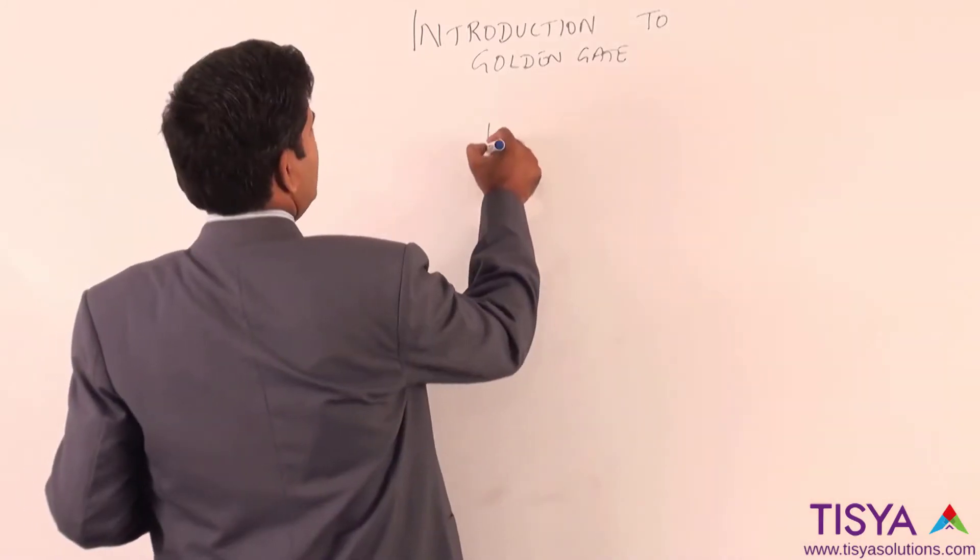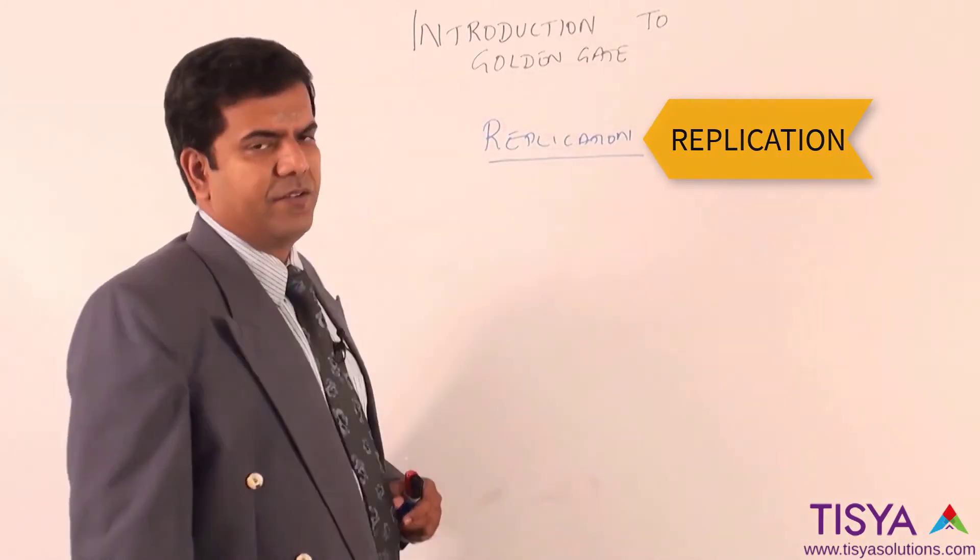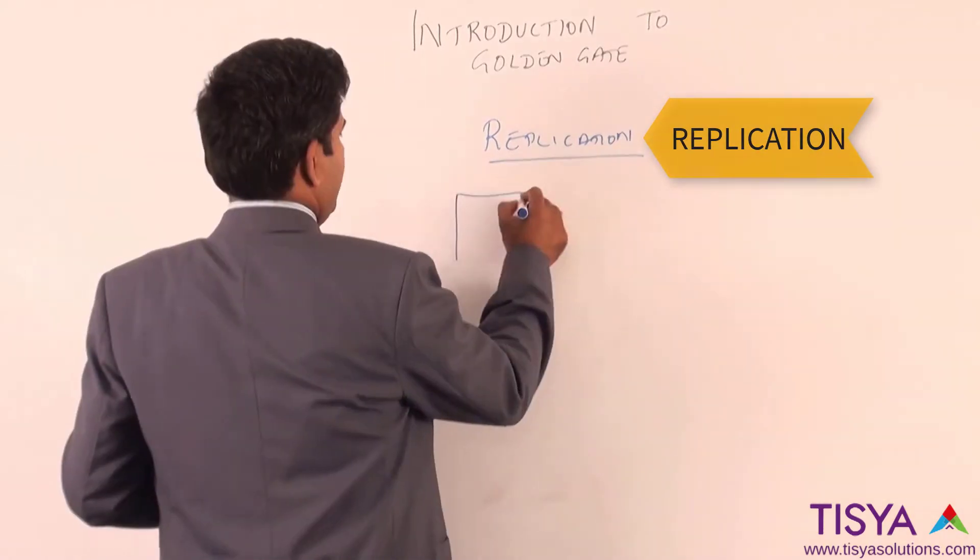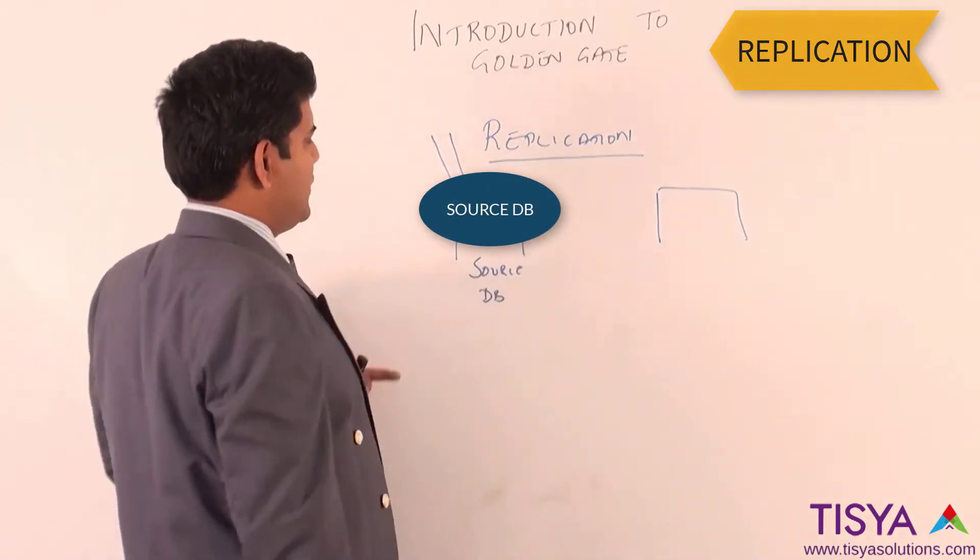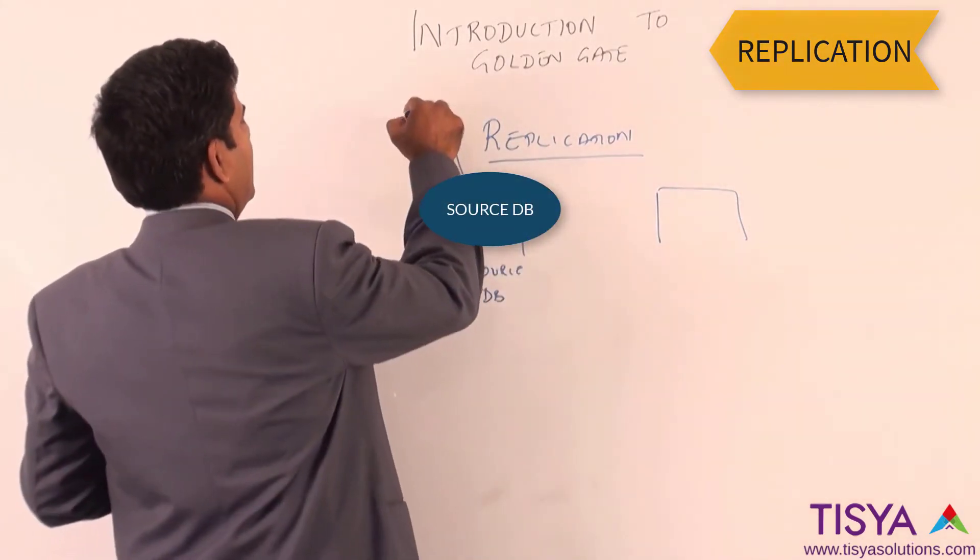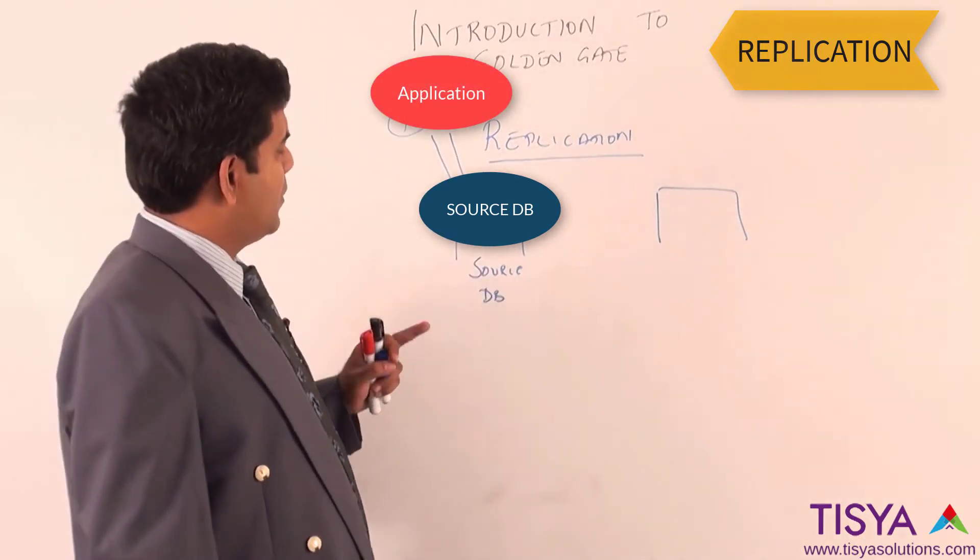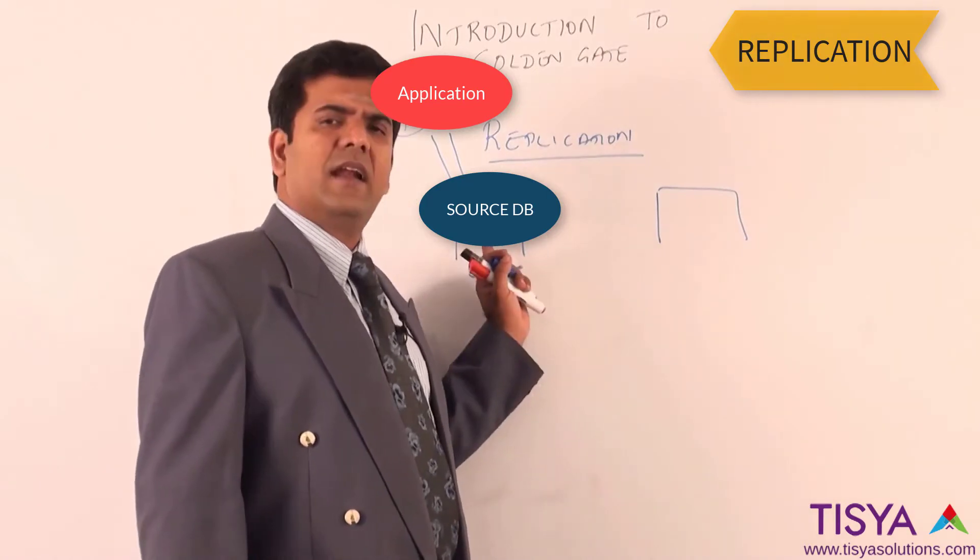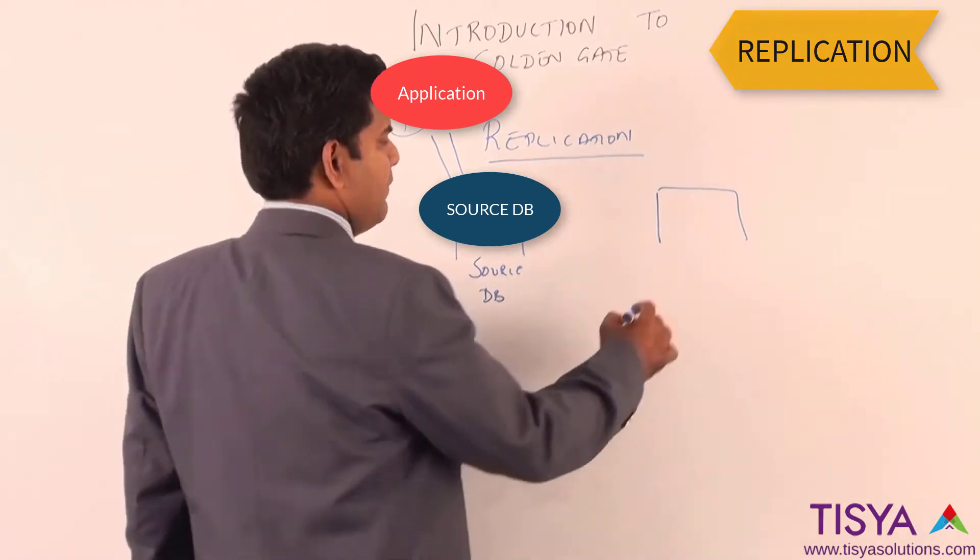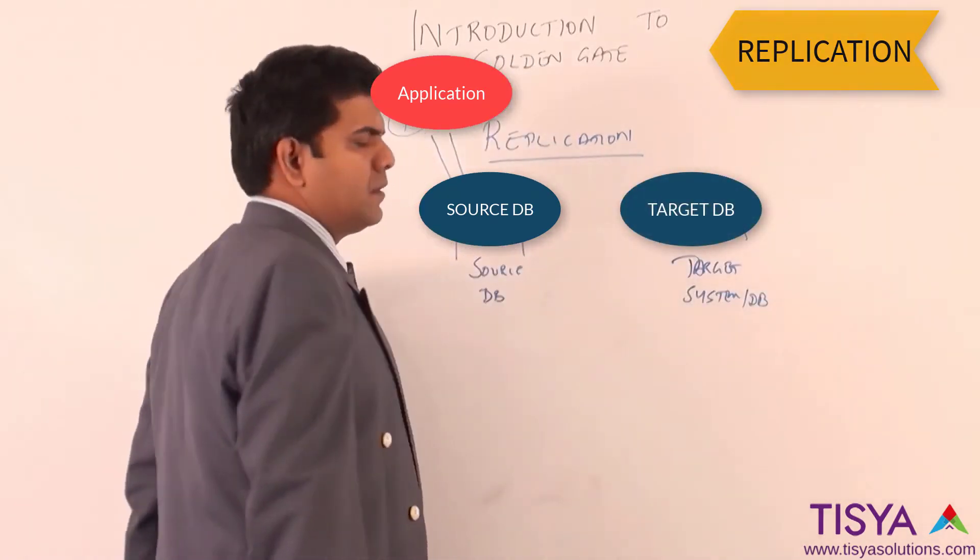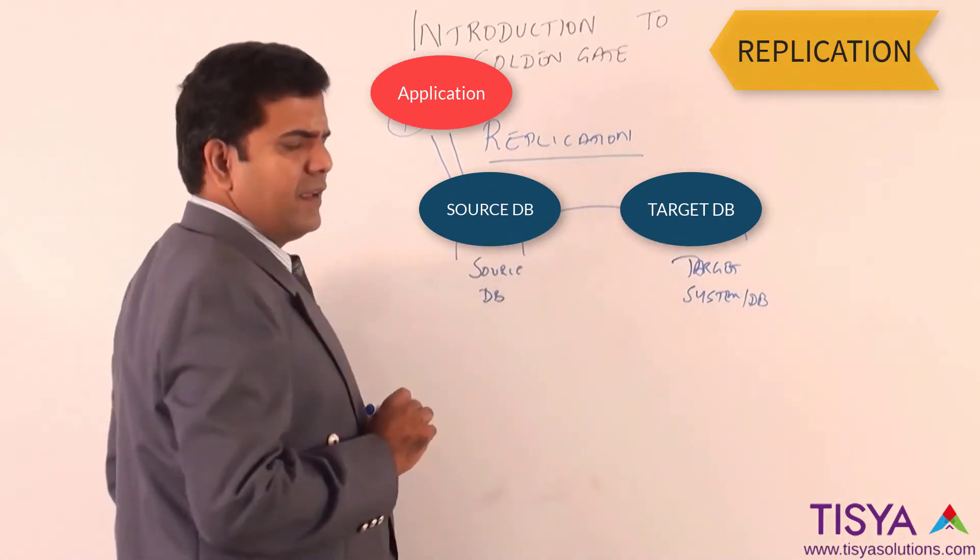The most important feature is replication. What do we mean by replication? I might have a source database in which transactions are being performed by applications. This is a high critical database, and I want to ensure I keep a copy of all the data as transactions are happening into another target system or database. The way in which I can send this data from source to target is what replication is.